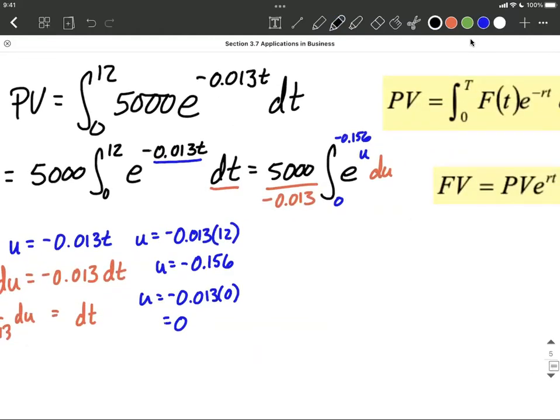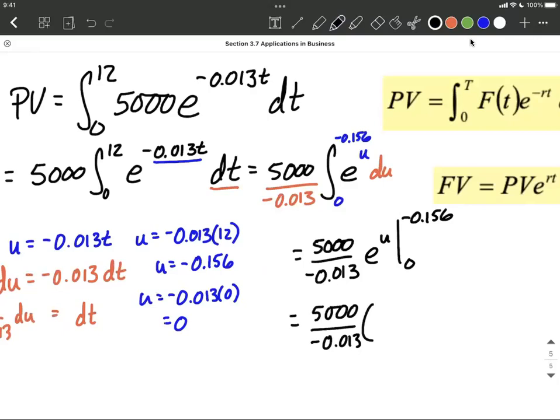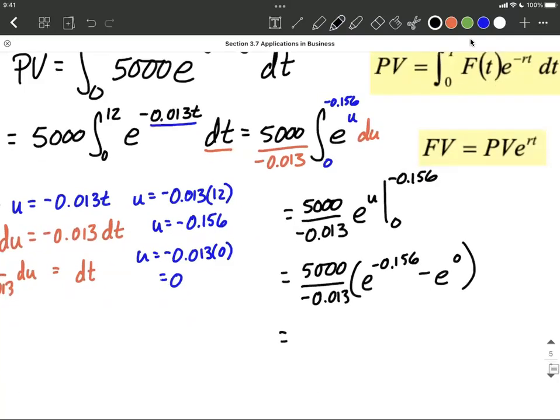Alright, so now that everything is in terms of u, let's go ahead and integrate. It's going to be a nice easy integration because it's e to a power. So it's just going to be e to the u power, evaluated between 0 and negative 0.156. I'm going to go ahead and fill in our bounds of integration. So e to the negative 0.156 minus e to the 0 power. And that e to the 0 power at the end becomes a 1. So 5,000 over negative 0.013 e to the negative 0.156 minus 1.